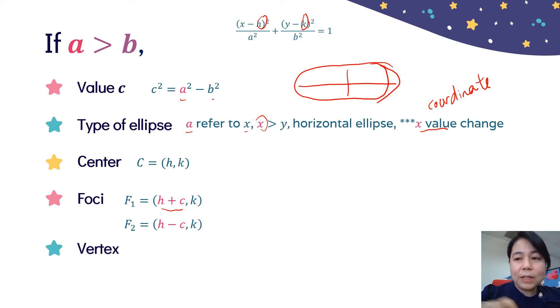For the vertex, V₁, it is (h+a, k). V₂ is (h-a, k). A always behave X, so when X coordinate change, we need to plus minus A. For the major axis, A is greater than B, so we will get 2A.